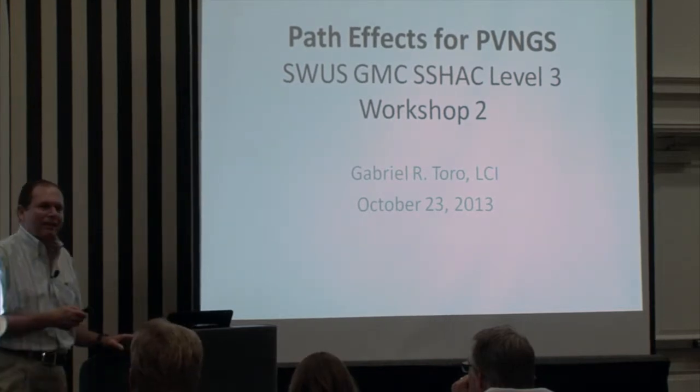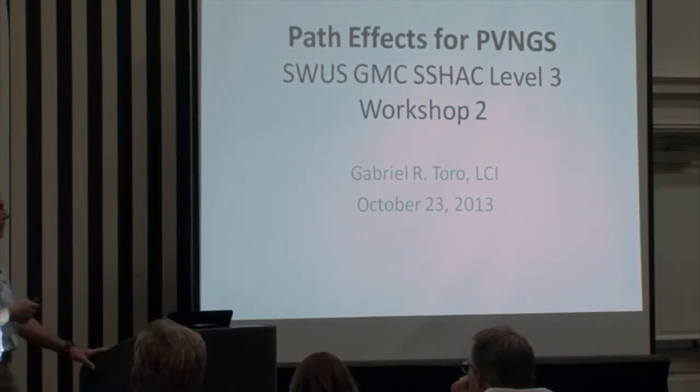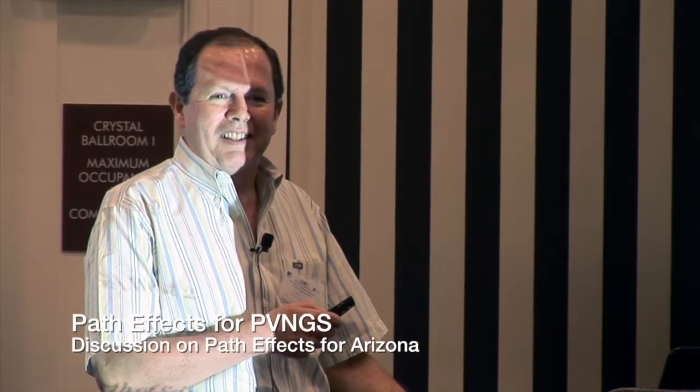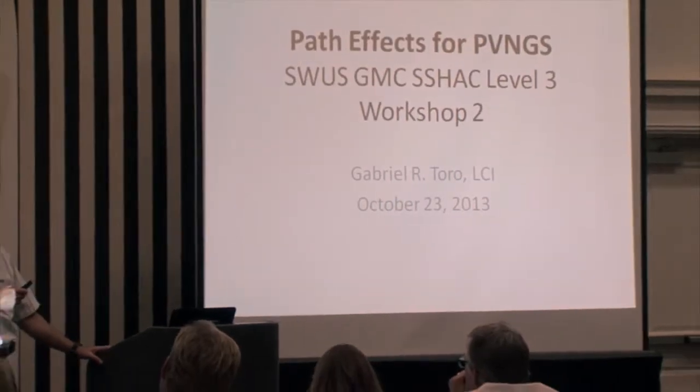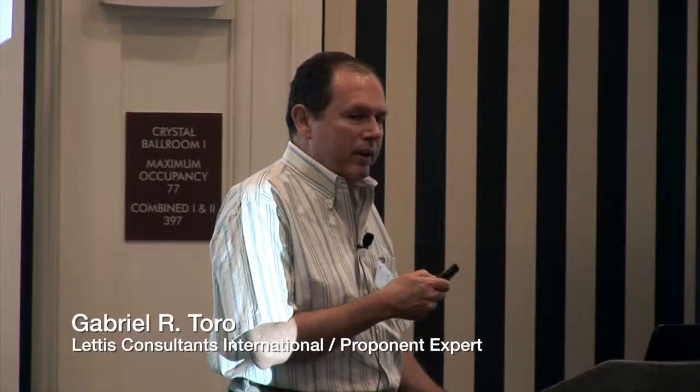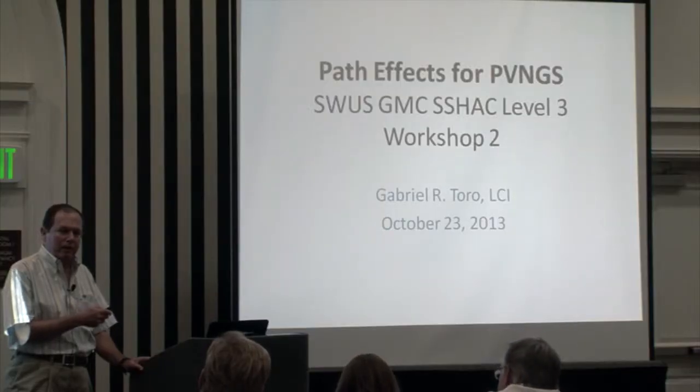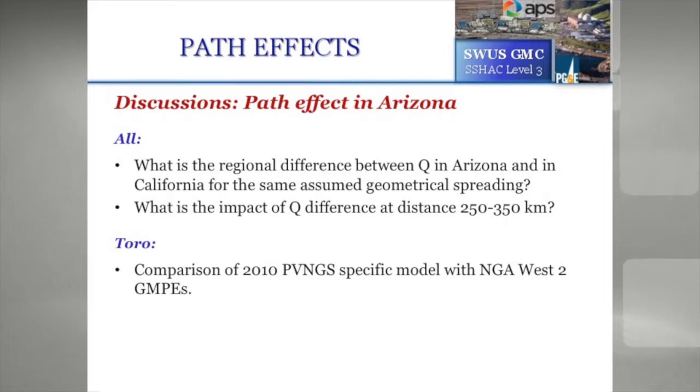This is not really a proponent presentation. This is something we did for the level two study, and it was in many ways simplified. Turns out it works really nicely, as we'll see later. But it's the idea of trying to come up with GMPs that were applicable at this distance range — we're talking about 200, 300 kilometers — which come from Cerro Piero and other sources.